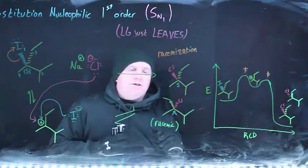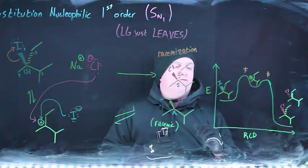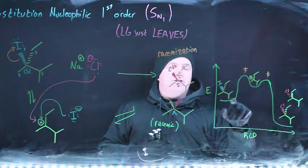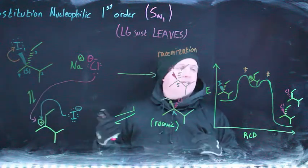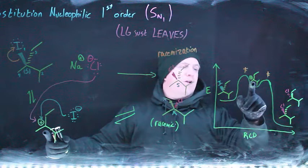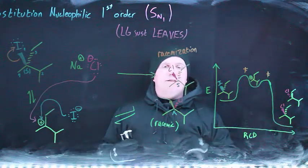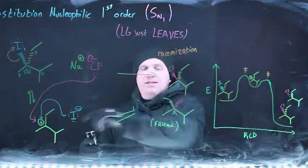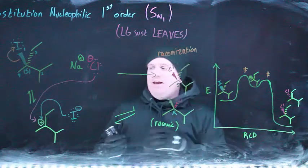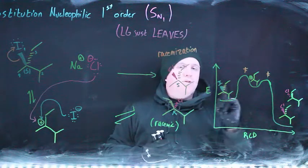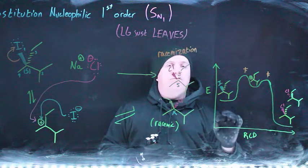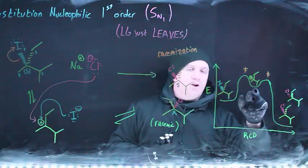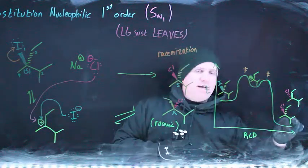The reaction coordinate diagram for this SN1 mechanism shows the starting materials at initial energy, going over a transition state as the iodide leaves — requiring energy — then settling into the carbocation intermediate, which exists for some finite lifetime. Unlike SN2 which passes straight through one transition state, here you pass into a stable well. The carbocation is then attacked by chloride, passing through another transition state to give products. An SN1 reaction always involves an actual carbocation intermediate in two steps: leaving group leaves first, then nucleophile attacks.